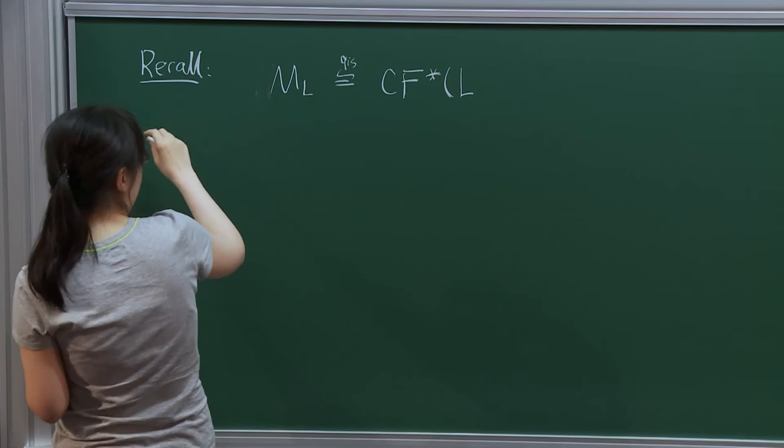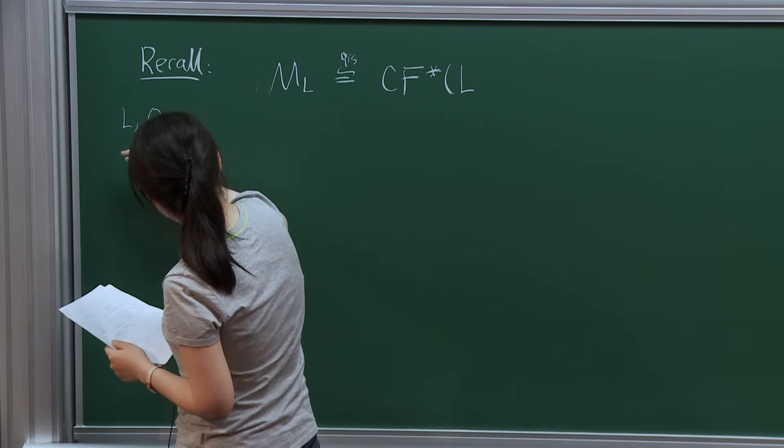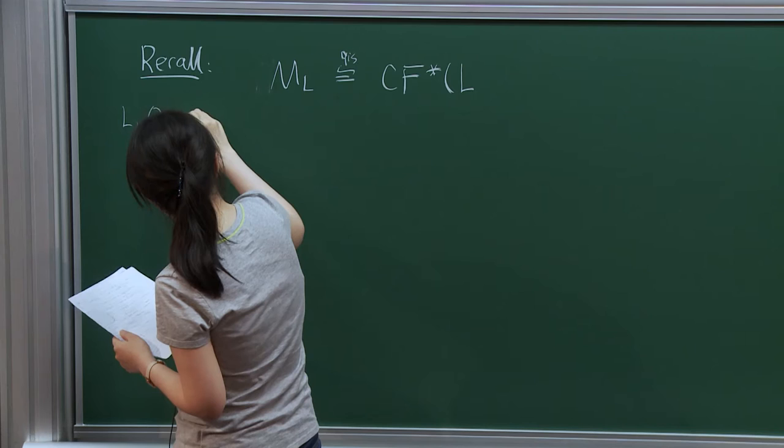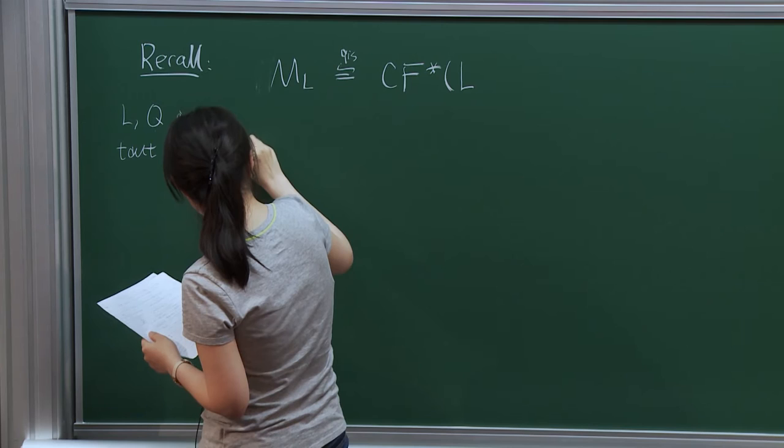Remember, we have Q and L. They are tautologically unobstructed — which is something he defined — meaning it doesn't bound any disk. And in some closed manifold, then we can define three modules.